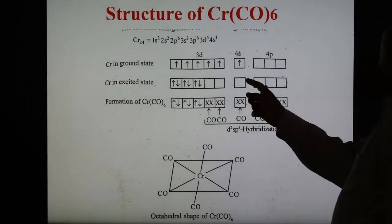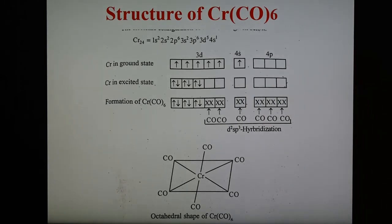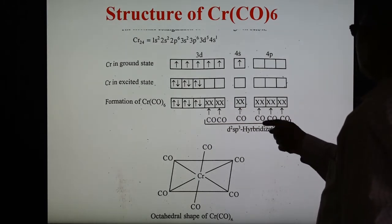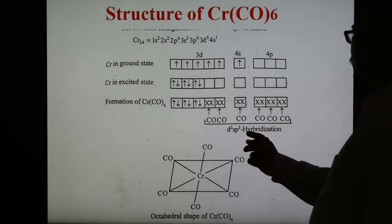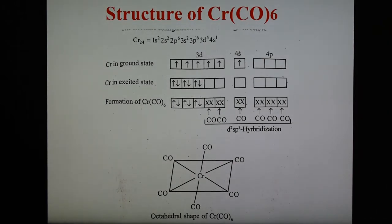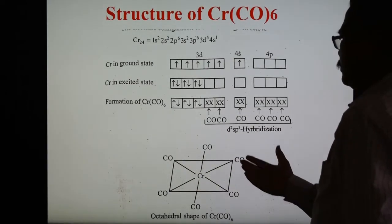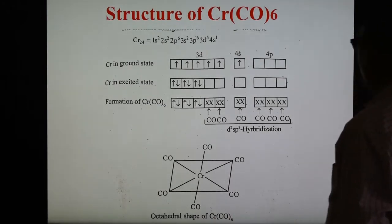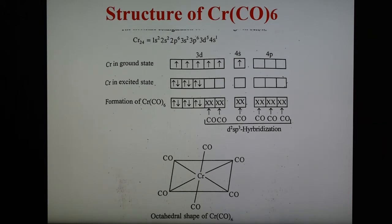In this case, 2d, 1s, and 3p orbitals undergo hybridization, forming 6 d2sp3 hybrid orbitals. These 6 vacant orbitals accept electron pairs from the 6 CO carbonyl groups, forming 6 coordinate bonds. Because of d2sp3 hybridization, the shape of chromium hexacarbonyl is regular octahedral with all bond angles of 90 degrees.